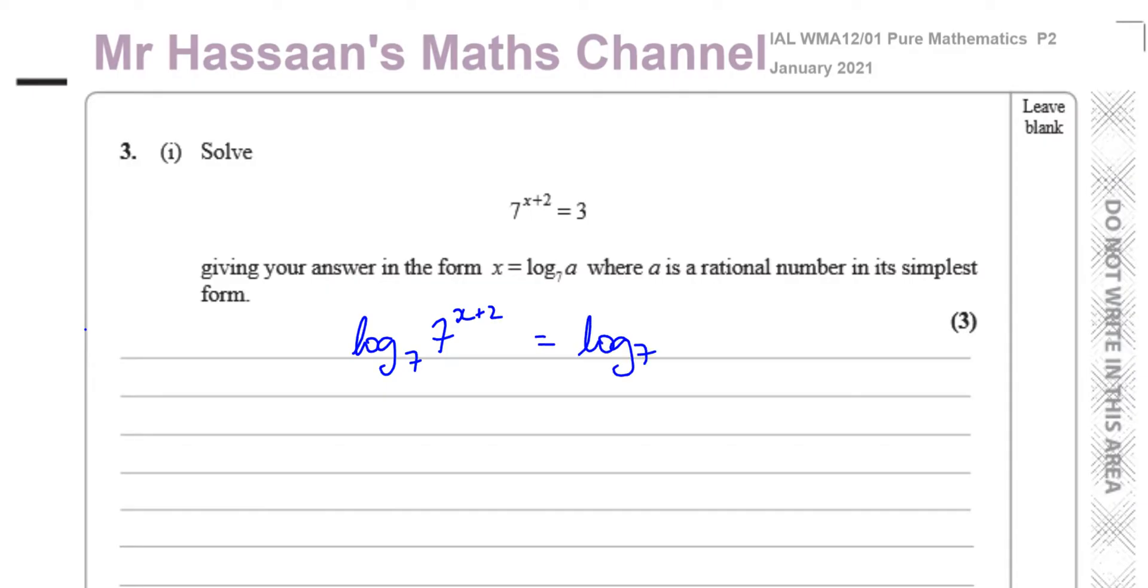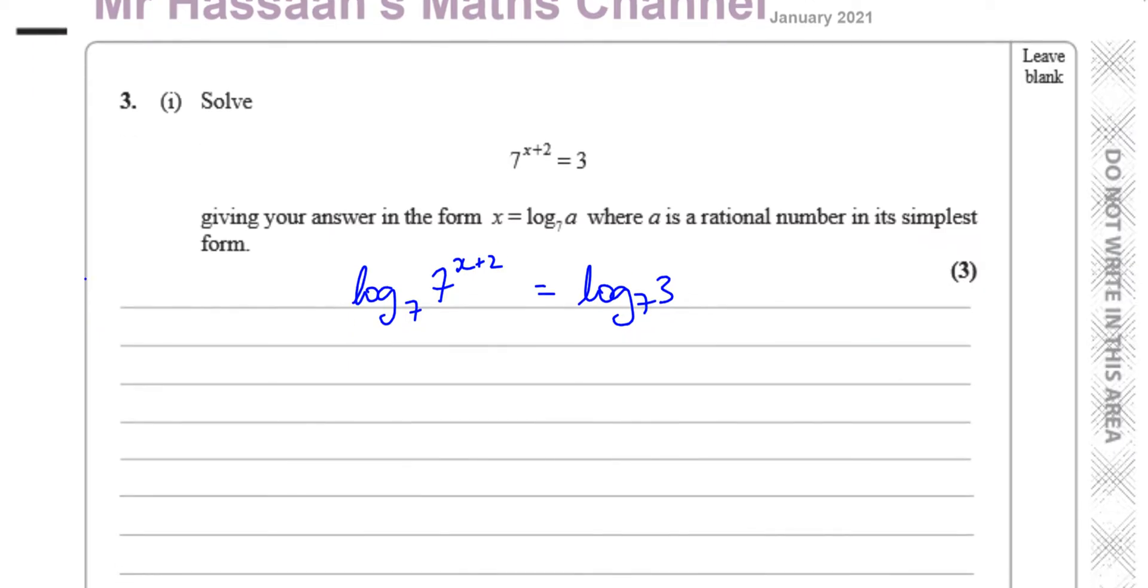So I have log to the base 7 of 7 to the power of x plus 2 equals log to the base 7 of 3. And I can now use the power law where I can take this power. We have log to the base a, b to the power of c, which is the same as c times log to the base a of b.